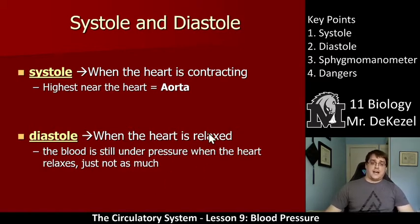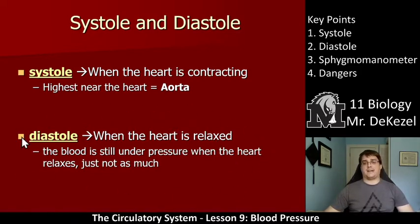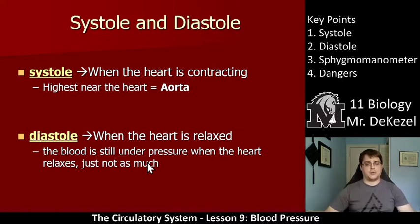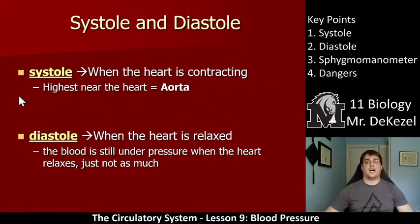We talked about systole and diastole a little bit before. Diastole is when the ventricles are relaxed, so the blood is still under pressure when the heart relaxes, but not as much pressure — the ventricles are not pushing the blood at that time. So when we take our blood pressure, that's the lower number. Systole is the time when the ventricles are contracting, so there's a higher blood pressure — it is the higher number, and it is always highest near the aorta.